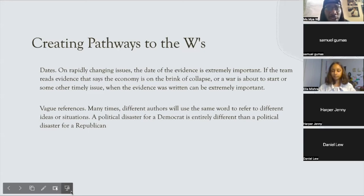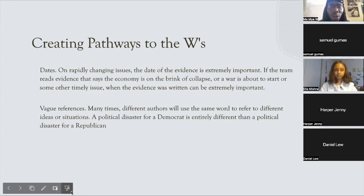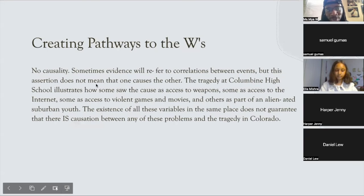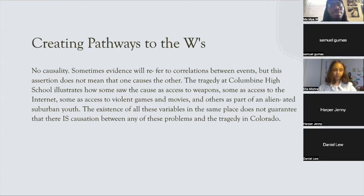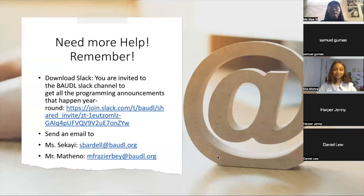Vague references are another fallacy: authors often use the same word to refer to different ideas. For example, 'this was a disaster for Democrats so it'll be a disaster for Republicans,' or 'Russia can't keep up with the U.S., so China can't either' — that doesn't follow, because they have two different geopolitical landscapes. Another fallacy is no causality: sometimes evidence refers to correlation between events and claims the same cause, which is not necessarily the case.